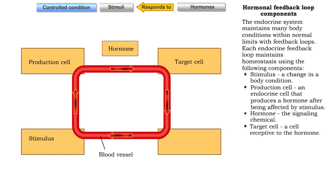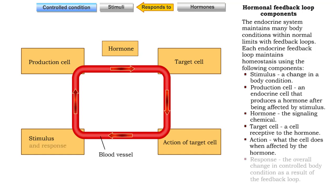Target cell, a cell receptive to the hormone. Action, what the cell does when affected by the hormone. Response, the overall change in controlled body condition as a result of the feedback loop.